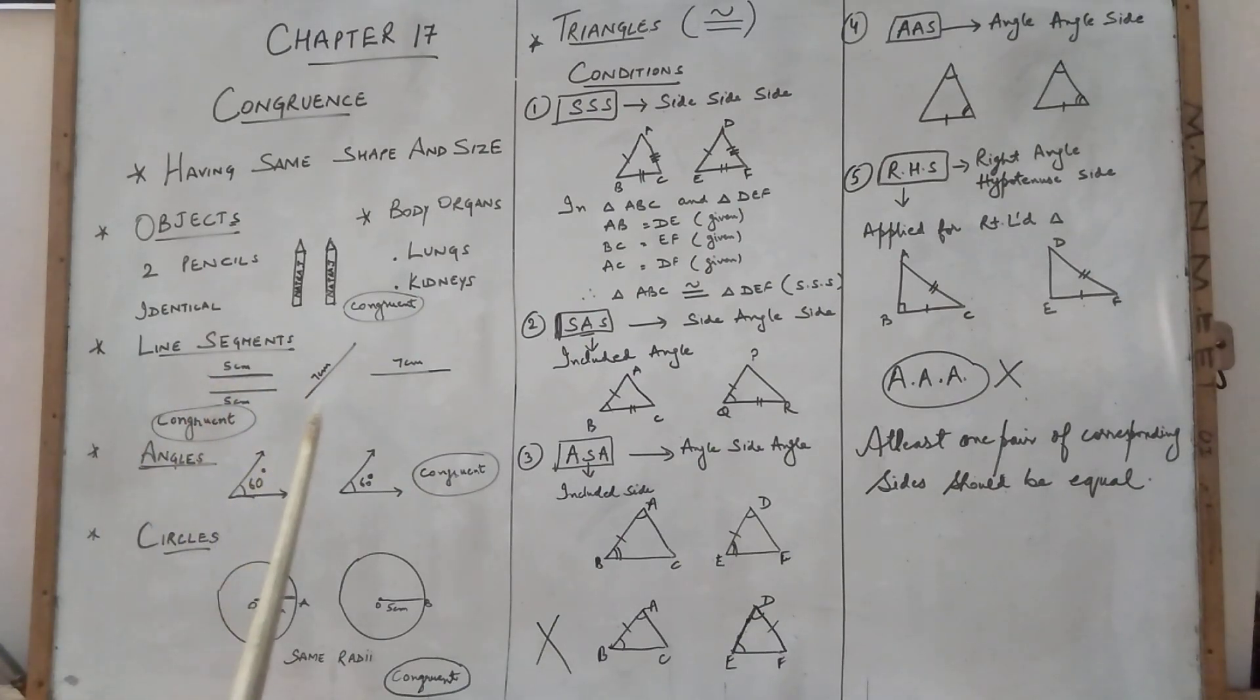Then now I will explain line segments. Suppose I have taken two line segments, 5 cm, 5 cm. Both are having the same shape, same size, same length, so they are congruent.